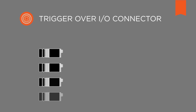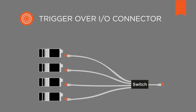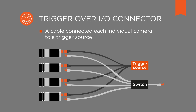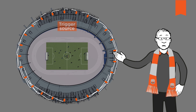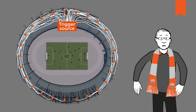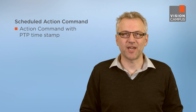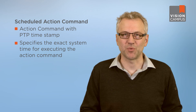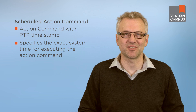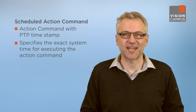In the past, triggering multiple GigE Vision cameras at the same time required a hard-wired connection via the camera's digital I/O connector — a cable connected each individual camera to a trigger source. Imagine this at a soccer stadium: you would have to use hundreds of meters of cables throughout the entire stadium. Thanks to GigE Vision 2.0, you can now add a PTP timestamp to the action command to specify the exact system time at which the action command should be executed. This is called a scheduled action command.